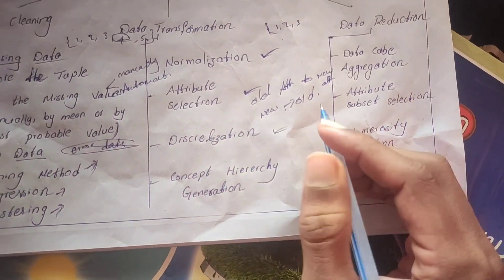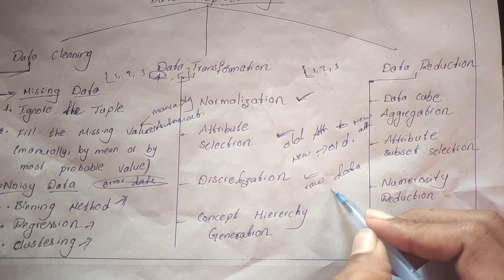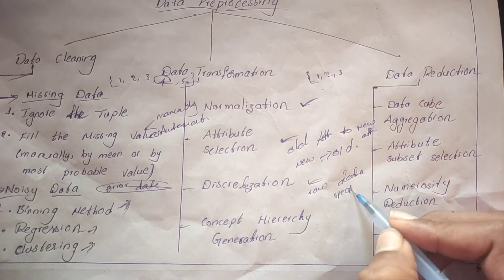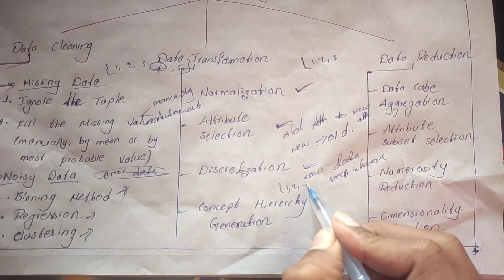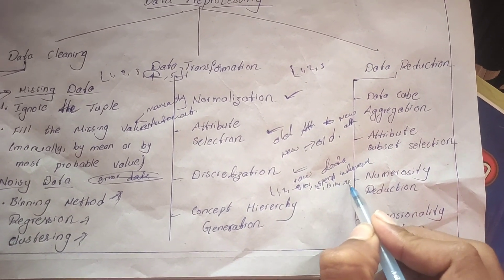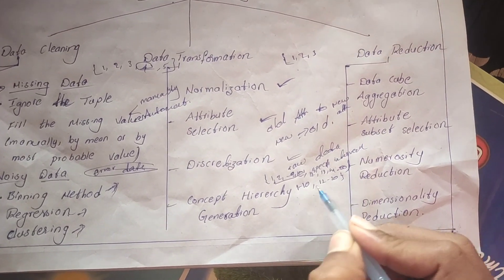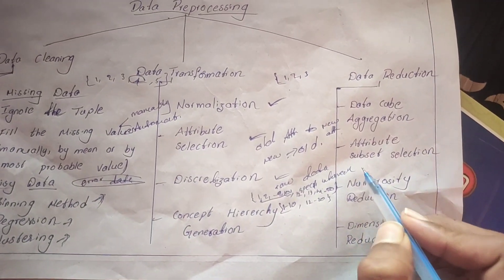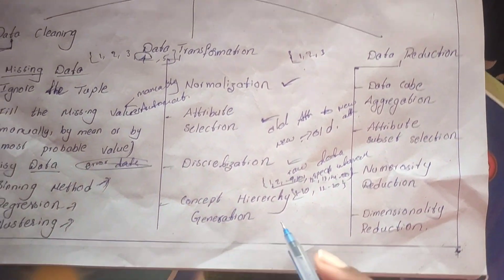Discretization means raw data is converted into a specific interval format. For example, raw values like 1 through 10 can be grouped as the interval 1–10, and values 12 through 20 as the interval 12–20. Converting raw data into interval format makes data processing easier and also decreases redundancy.